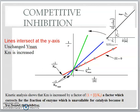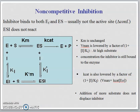Next, we look at non-competitive inhibition. For non-competitive inhibition, the inhibitor will bind to the free enzyme, and it can also bind to the ES complex. When it binds to the ES complex, it is usually not on the active site — the inhibitor will bind on another site.